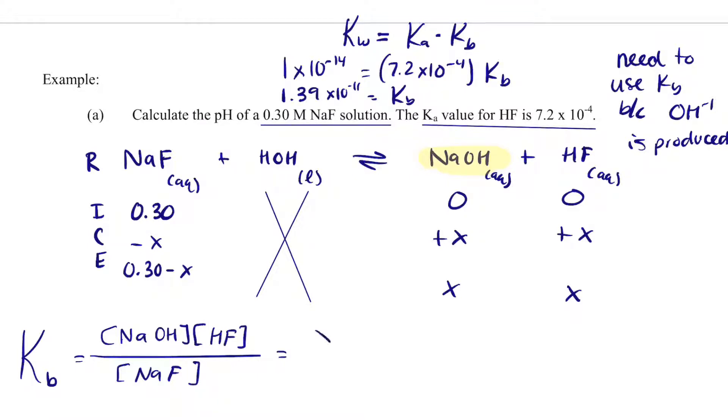So now I can plug this in. X squared divided by 0.30 minus X. That equals 1.39 times 10 to the minus 11. And I can get rid of the minus X due to the 5% rule.